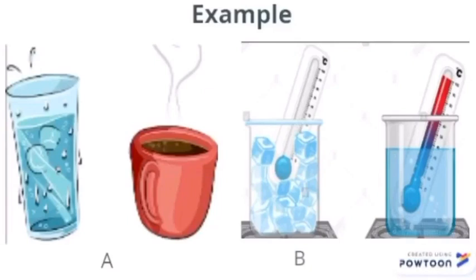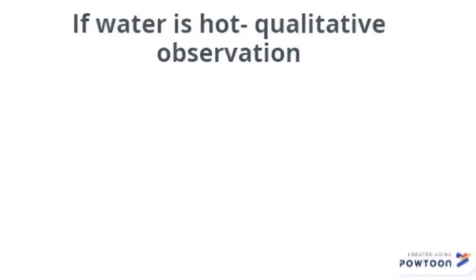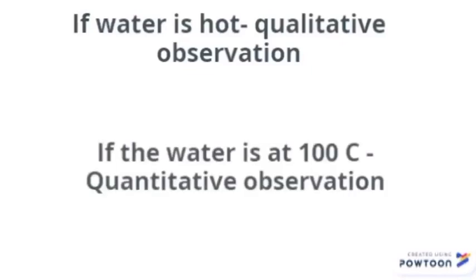Picture A is an example of a qualitative observation, where we simply state the quality — that the water is hot or cold. Picture B is an example of a quantitative observation, where we state how much hot or cold the water is. For instance, saying 'the water is hot' describes its quality, whereas saying 'the water is at 100 degrees Celsius' describes its quantity. That is the difference between qualitative and quantitative observations.